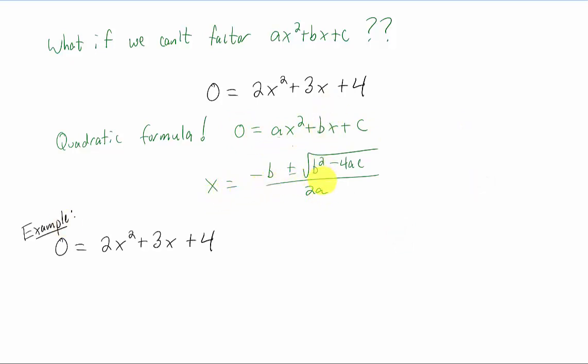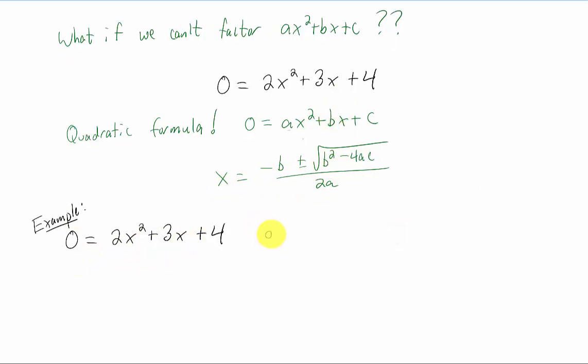Let's use this quadratic formula to solve for x in this equation right here. The first thing you wanna notice is that our a value is two, our b value is three, and our c value is four. Now we just have to substitute a equals two, b equals three, and c equals four into the quadratic formula, and do our order of operations properly. That's gonna look like this.